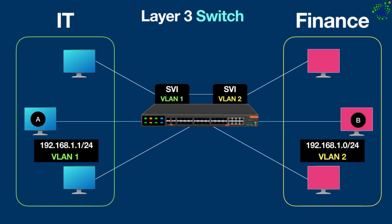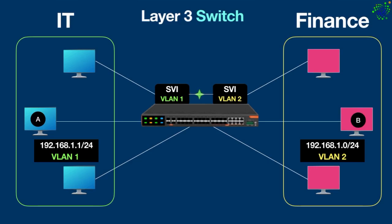For instance, if device A on VLAN 1 wants to talk with device B on VLAN 2, device A sends data to the default gateway, which is the SVI assigned to VLAN 1. The layer 3 switch then checks its routing table and forwards the data to VLAN 2's SVI, and then on to device B. That is basically how a layer 3 switch works.